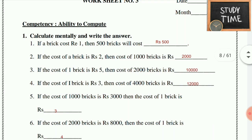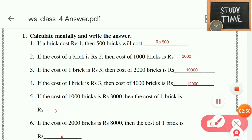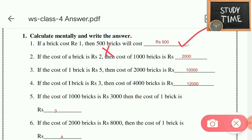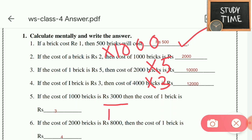If the cost of 1 brick is 1 rupee, then the cost of 500 bricks is 500. If the cost of 1 brick is 2 rupees, then the cost of 1000 bricks is 2 × 1000 = 2000. If the cost of 1 brick is 5 rupees, then the cost of 2000 bricks is 2000 × 5 = 10,000. If the cost of 1 brick is 3 rupees, cost of 4000 bricks — multiply by 3. If the cost of 1000 bricks is 3000, then cost of 1 brick is 3 (because 3000 ÷ 1000).